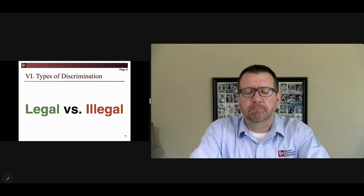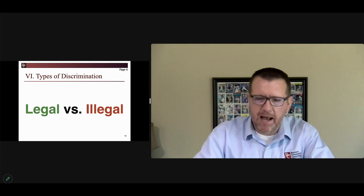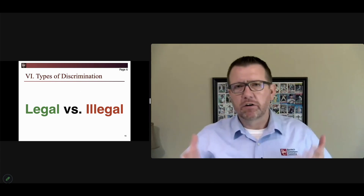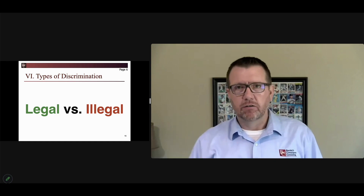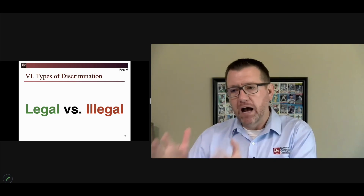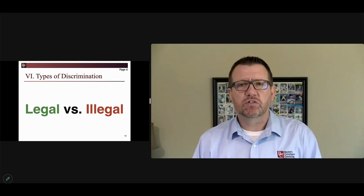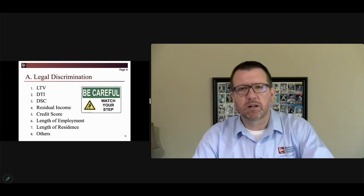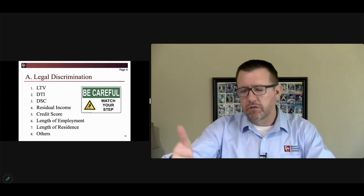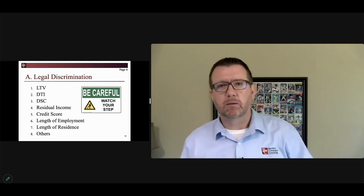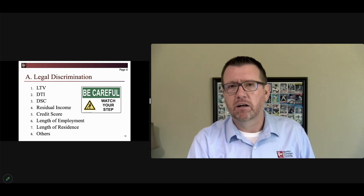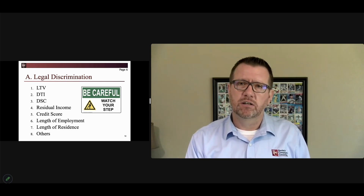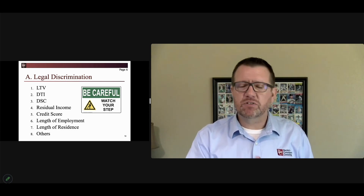Types of discrimination — I mentioned this earlier and want to unpack it here. There are legal forms of separating your applicants and illegal forms. We need to make sure we're not illegally doing any sort of separation. The legal discrimination you do day in and day out includes loan-to-values, debt-to-incomes, debt service coverage, residual income, and credit scores — these are all legal ways to slice and dice your customers.